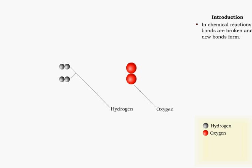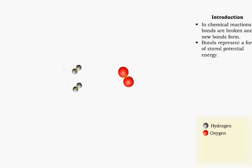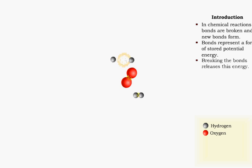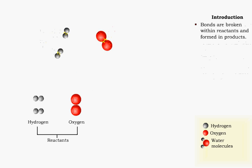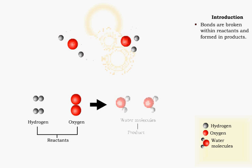Chemical reactions involve making and breaking bonds in order to form new molecules. The bonds that hold together the hydrogen and oxygen molecules are a form of potential energy. When these bonds are broken, energy is released. Some of this energy is used to make new bonds. This chemical reaction formed two water molecules, the products, from hydrogen and oxygen molecules, the reactants.